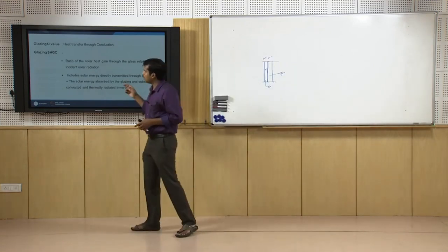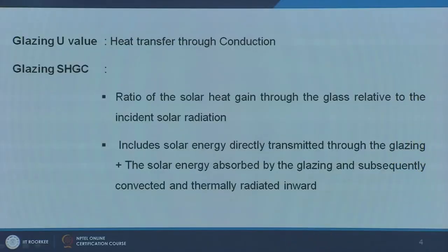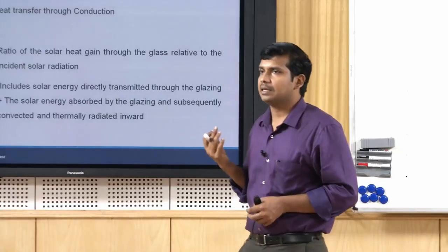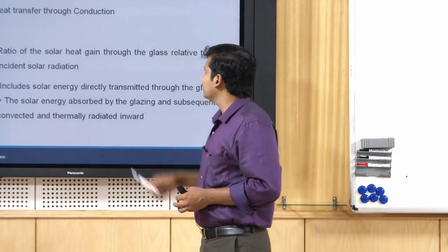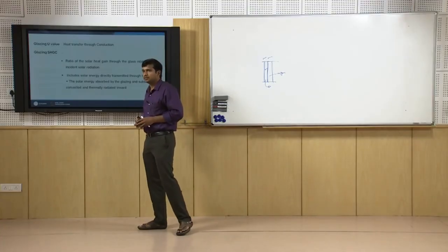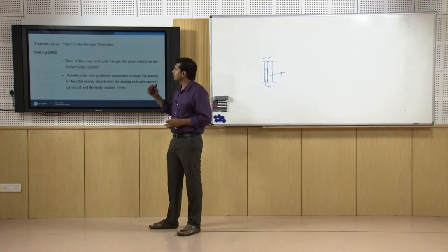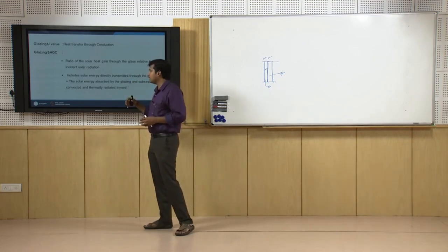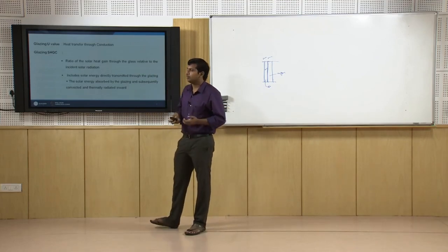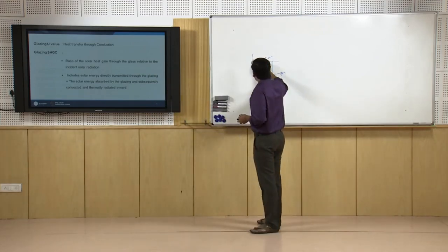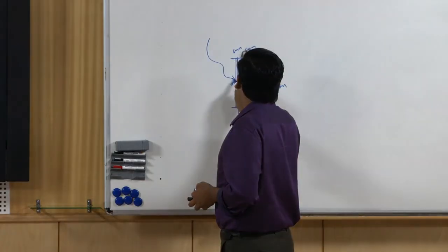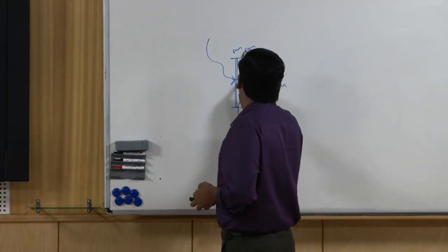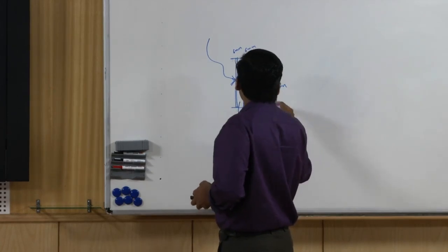Another important factor is the solar heat gain coefficient, commonly referred to as SHGC. Some older codes and test standards refer to it as SC or shading coefficient. It simply gives you the ratio of solar heat gain through the glass relative to the incident solar radiation. When solar radiation hits the glass, it is a proportion of solar energy directly transmitted as well as absorbed and re-emitted — the short wave solar radiation hitting the glass is partly transmitted and partly absorbed, then retransmitted through each layer.